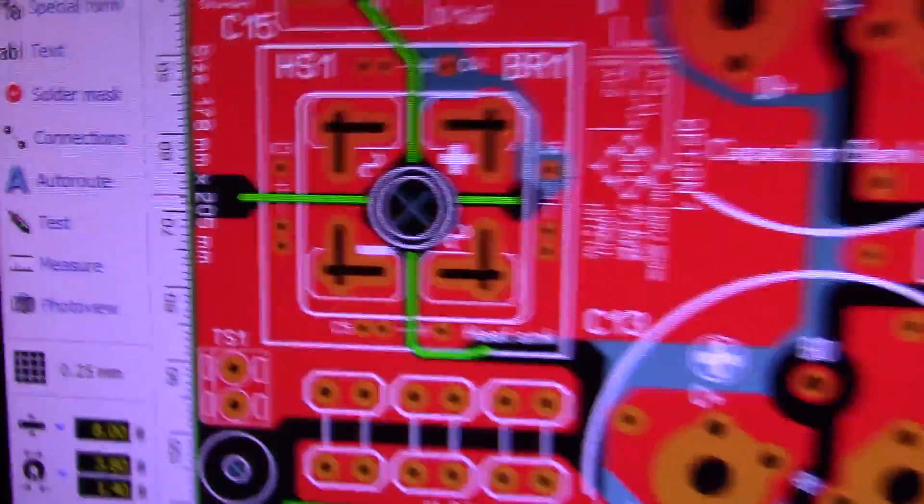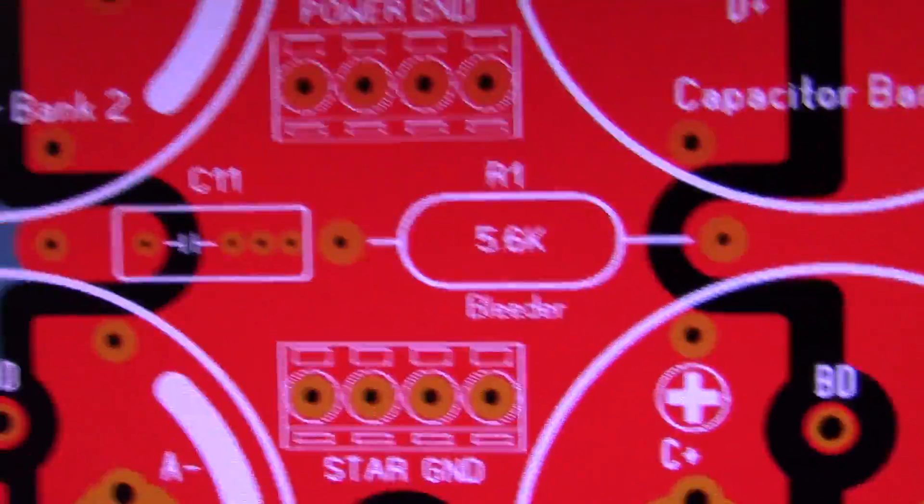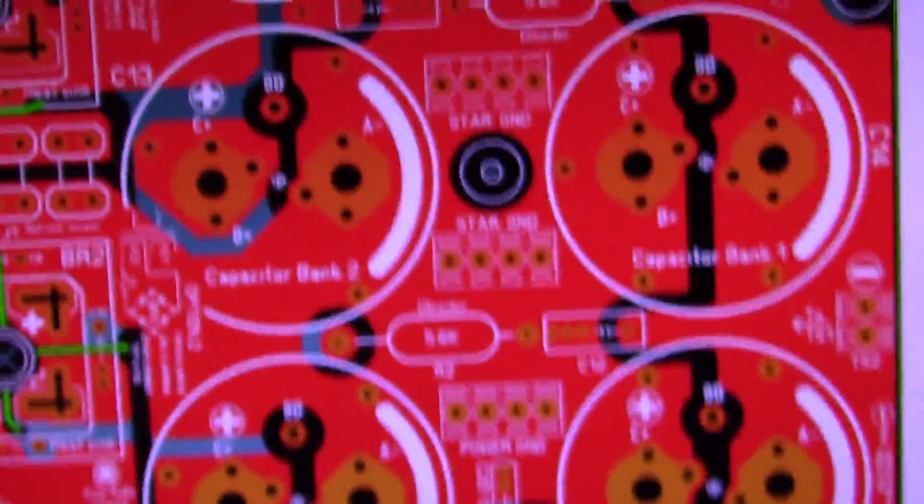This is the newest update that Mr. ST did to the PCB: information on the bleeder resistor, and this is the star ground - really important - and power ground. So you have plenty of connectivity.